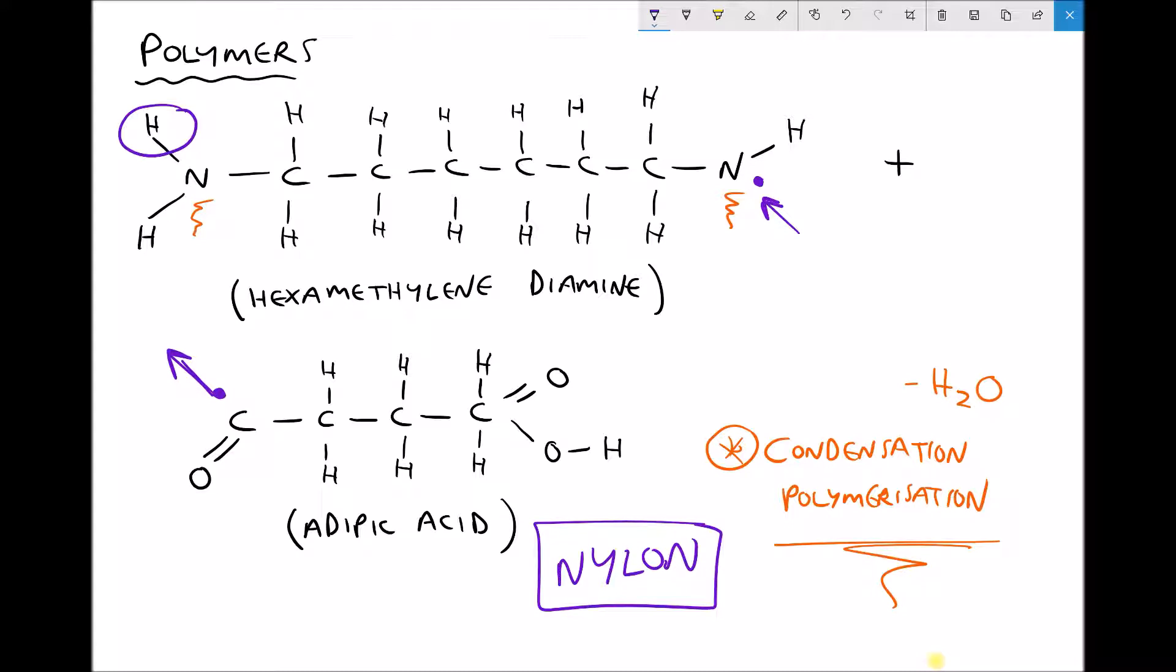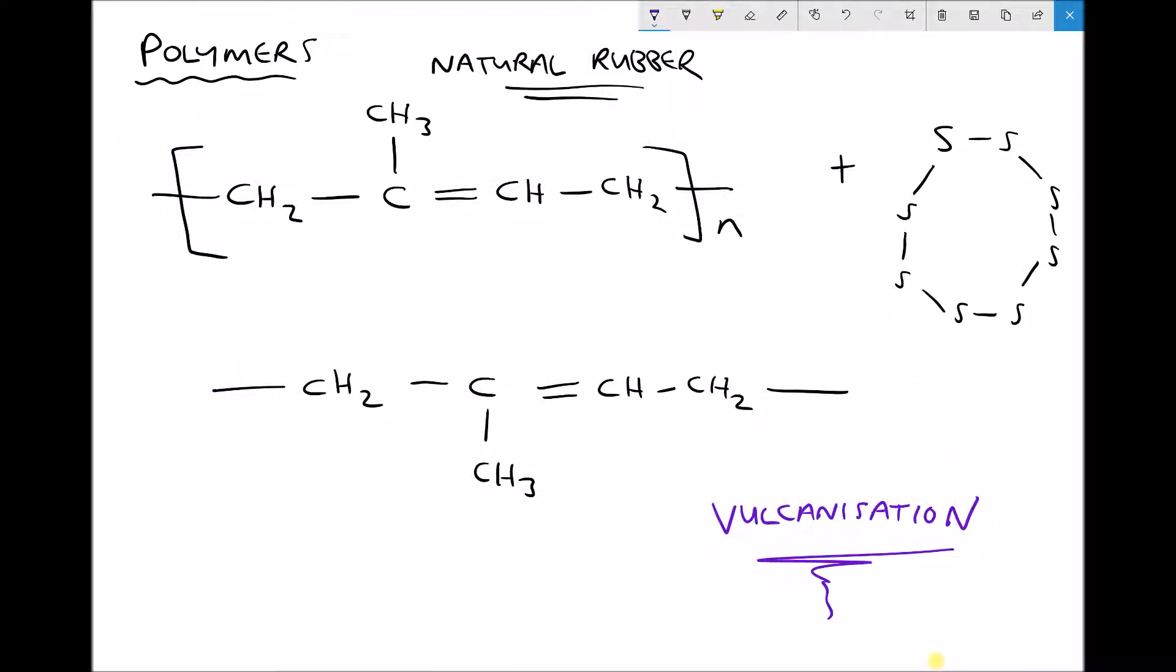I'm going to give you an example of how we can produce a branched polymer. In this reaction we have natural rubber and rubber is a flexible elastic material as you probably know. We're going to combine this in a process known as vulcanization. We're going to add sulfur in the form of this sulfur ring but we're also going to add heat and apply pressure.